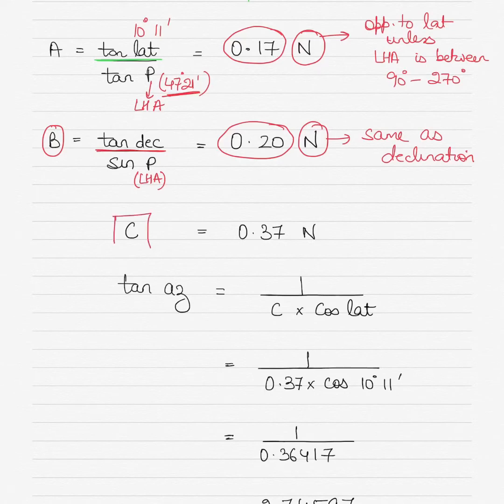Now to find C, if A and B are both same names, you will add them. In this case they are both north. 0.20 plus 0.17 gives you 0.37, and you name it north because you retain the name of the larger. Both are north, so you name it north.